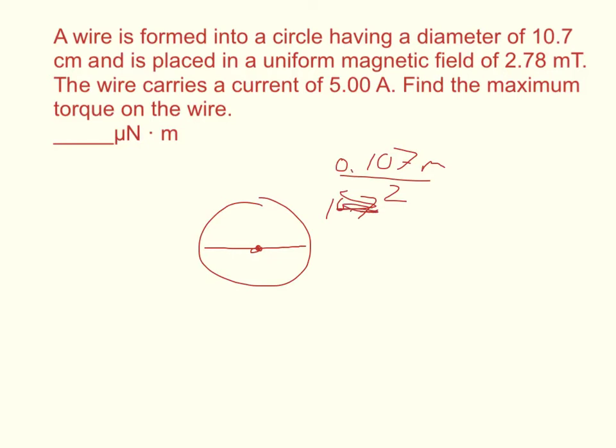What I want to find is the area because it asks for torque. The torque is equal to the magnetic field times the current times the area times the sine of theta. The area of a circle is equal to pi times the radius squared.